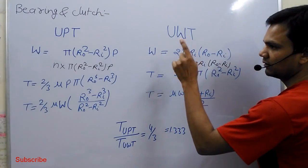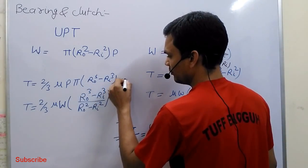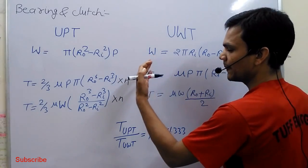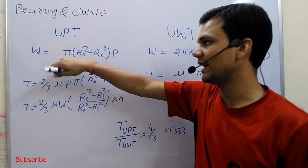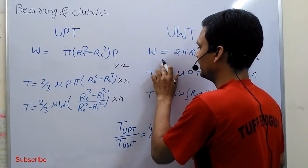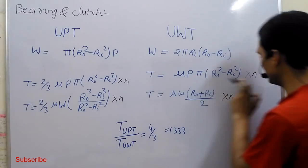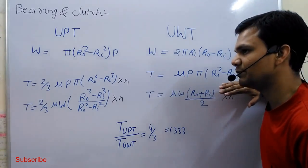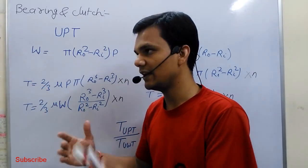In the case of clutch, the main function is to transmit torque. In the formula, we multiply N times for the torque while the load remains the same. So for clutch, if we have two discs, we multiply torque by two. For bearing, if load increases two times, we multiply load by two. In uniform wear theory, because frictional torque is less, it can still transmit the torque in less frictional torque.